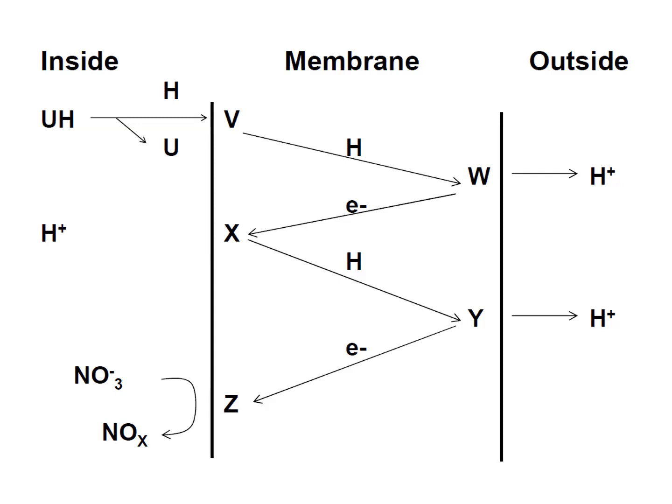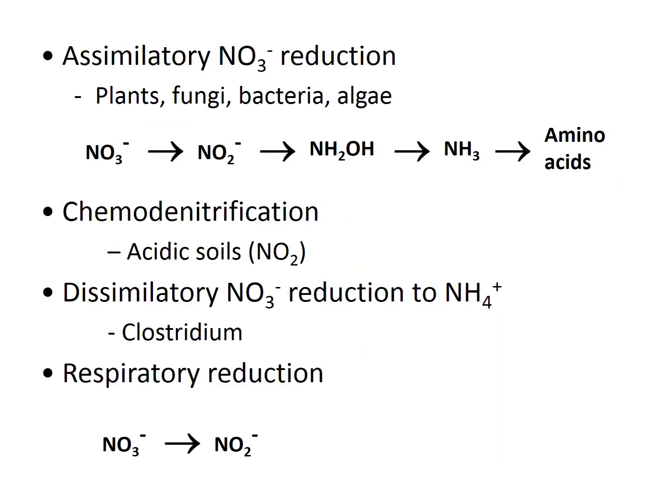These enzymes have specific requirements for each bacteria. With assimilatory nitrite/nitrate reduction, a vast group of organisms can do this — including plants, fungi, bacteria, and algae — where they take up nitrate from the soil and convert it into amino acids, immobilizing nitrogen in the form of organic material. Chemo-denitrification occurs more widely in acidic soils.